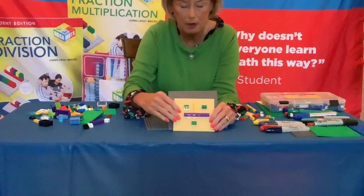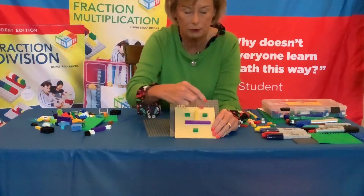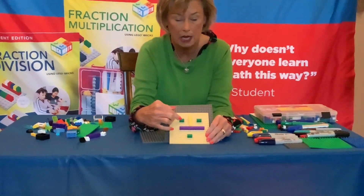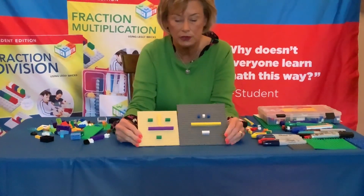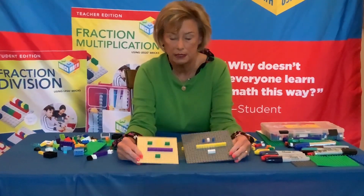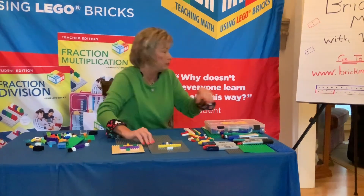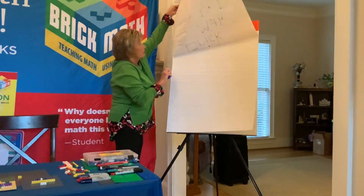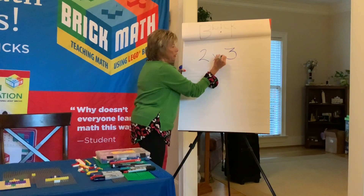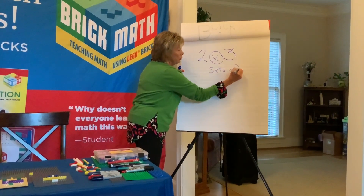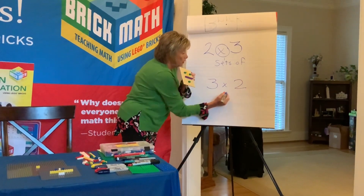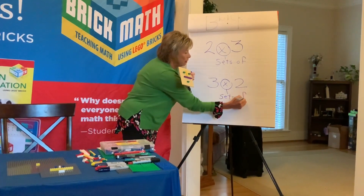Now let's look at this second model. This model is three sets — one, two, three — because I have three spaces and I've used large bricks to make the division. So this is three sets of two, or three times two studs. You'll notice that if I count the studs in either model, I have six studs, so the product or the answer is the same. But the first one is written as two times three, or two sets of three, and the second one is three times two, or three sets of two.